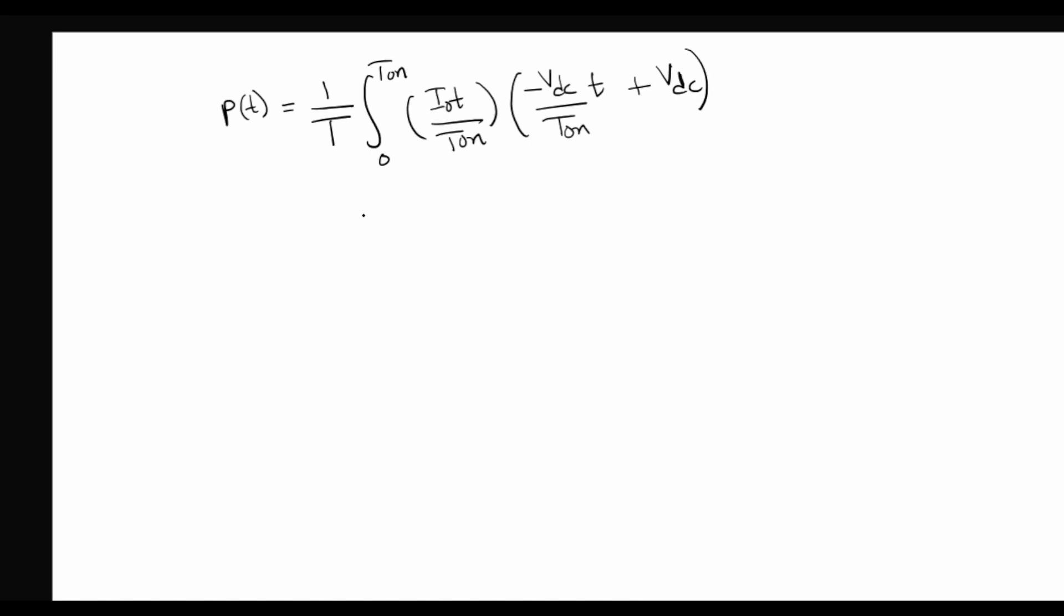Now expanding this further, we can write this as 1 over T integral 0 to T on, minus VDC I0 times t squared over T on squared. Since integration is a linear function, it is also commutative, so I can take this integral inside.